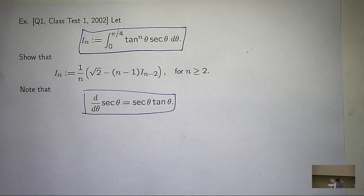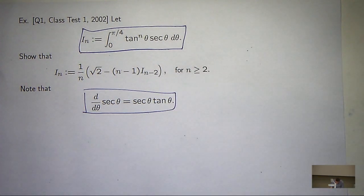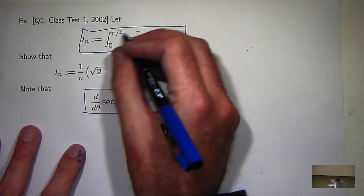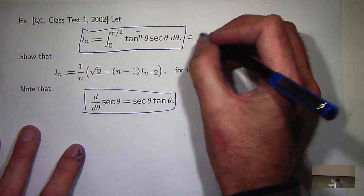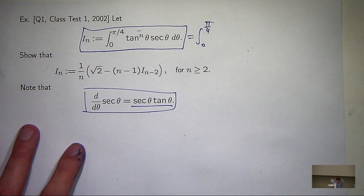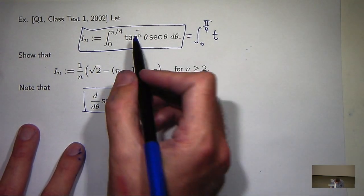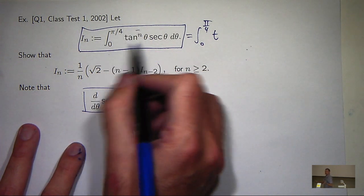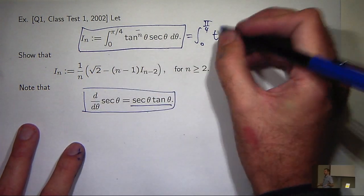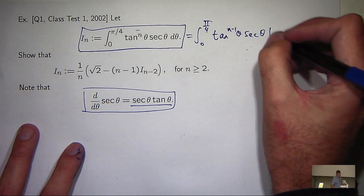Well, again, we're going to split up the integrand in the following way. And this kind of gives it away. I'm going to pull a tan theta out of this power of tan. So I'm going to treat it as the following product.